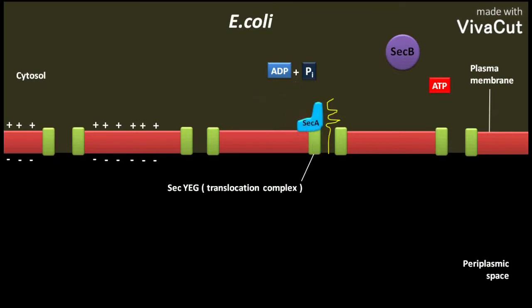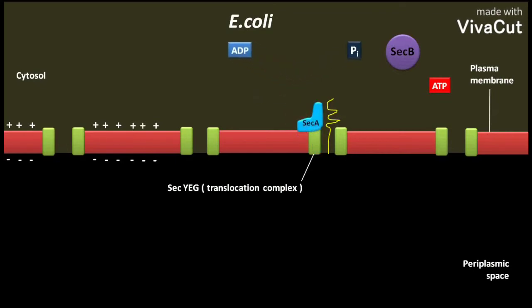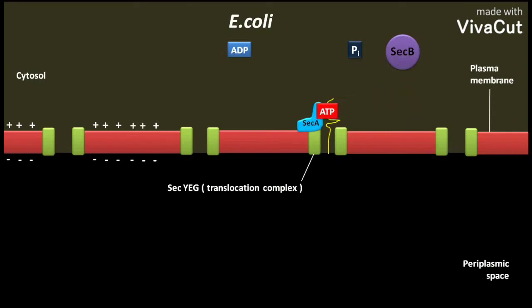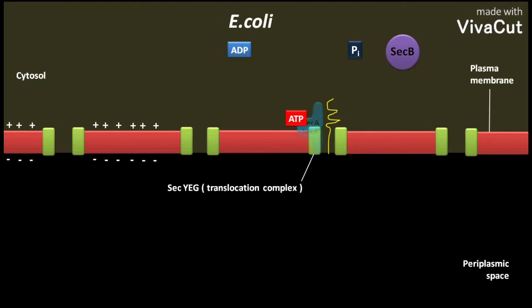As a result, the polypeptide is released. Then SECA binds another ATP, and as a result, SECA again inserts itself into the plasma membrane.